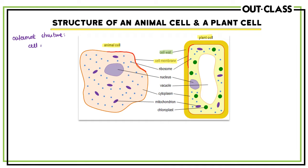In the animal cell the outermost structure is the cell membrane, but in the plant cell the outermost structure is the cell wall. This is the first very important difference between the animal and the plant cell. A plant cell contains a cell wall but an animal cell does not. Also visible inside the cells are small granular structures called ribosomes, which are found in both the plant cell and the animal cell.